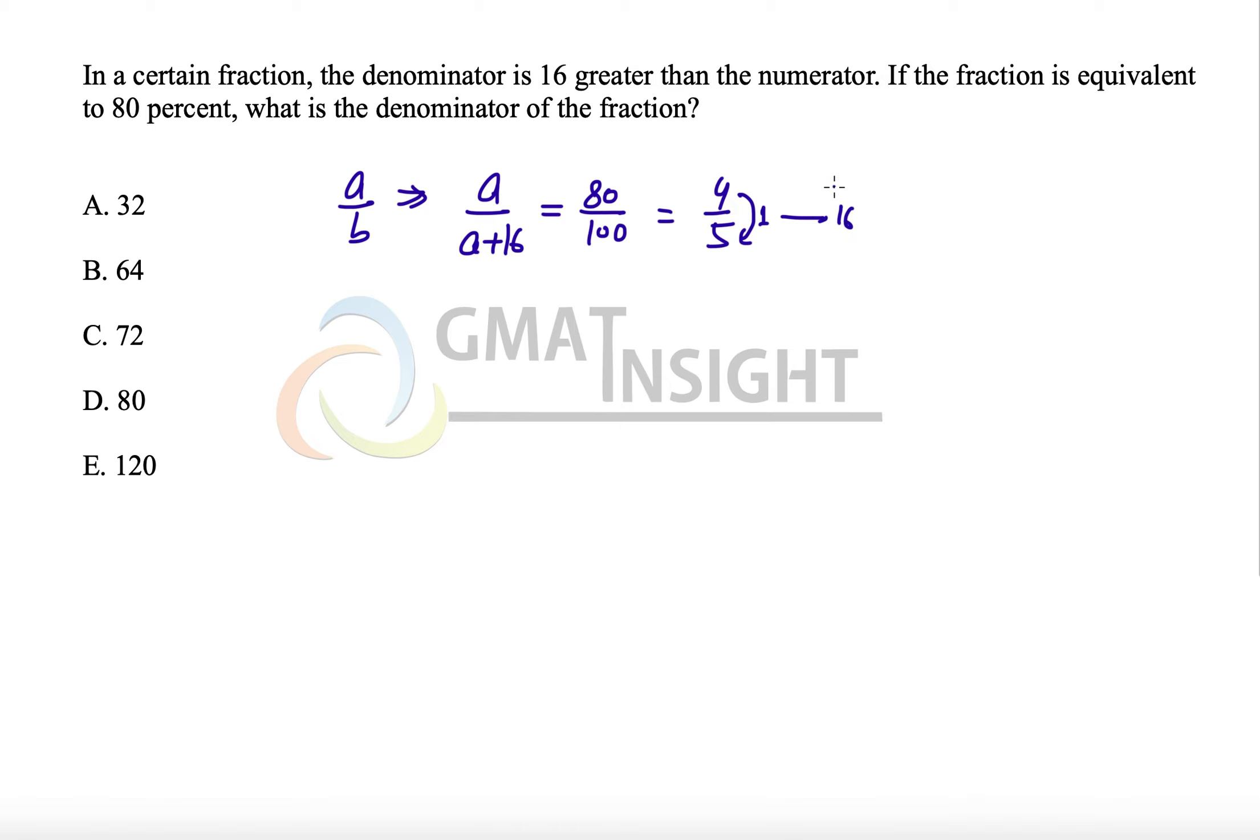we should multiply 16 with both numerator as well as the denominator, which means 4 multiplied by 16 becomes 64 and 5 multiplied by 16 becomes 80. And now you can see the difference between 80 and 64 is equal to 16.